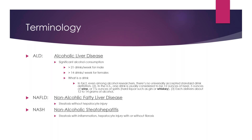You need to know what a drink is. One drink is 12 ounces of beer, which is one can of beer, five ounces of wine, or one and a half ounces of spirits — whether it's gin, whiskey, or vodka — and each of those delivers 12 to 14 grams of alcohol. That is considered to be one drink.